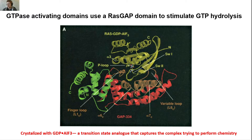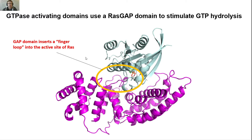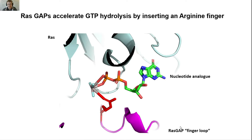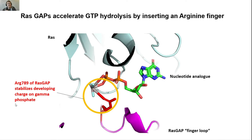What they found was that the GAP domain inserts a finger loop into the active site of RAS — basically poking something into the active site where that GTP is bound. If we zoom in, this little finger loop contains an arginine residue. That arginine residue is able to interact very nicely with the negatively charged phosphates of the nucleotide. The arginine finger is basically able to stabilize the developing charge occurring on the gamma phosphate — the phosphate that's going to be hydrolyzed off of the GTP — to facilitate this reaction.